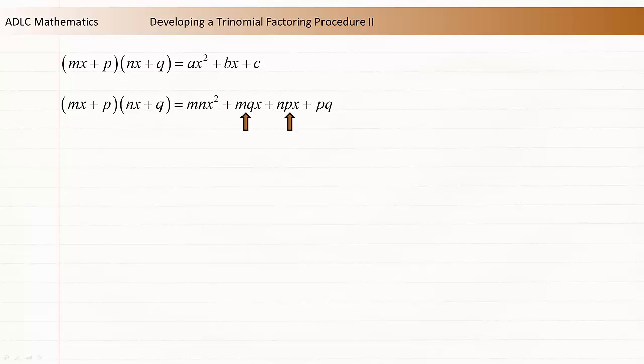As in the previous video, there are two x terms in the product of the two binomials. These can be combined into a single x term, mq plus np all times x.